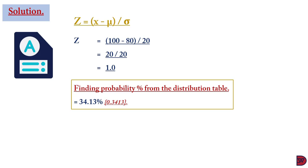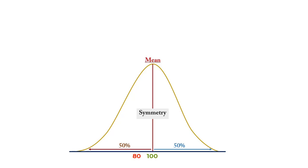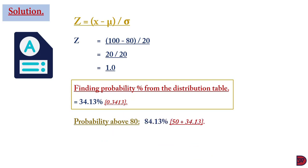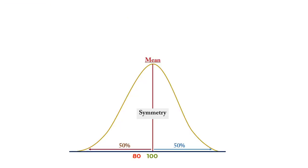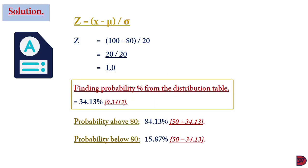That is 34.13% when multiplied by 100. Since 80 is below the mean of 100, it is to the left. For the probability above 80, you have the space from 80 to 100 plus the entire right column, so you add 34% to 50%. For the probability below 80, since 80 is to the left and 20 units away from the mean, you have less space, so you subtract 34.13% from 50%.